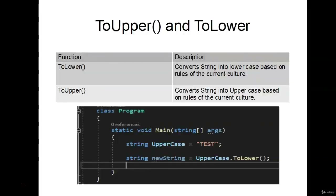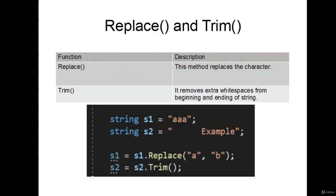Welcome back. In this video, we're going to talk a little bit more about string methods. In our last video, when you create a string variable, you basically create an object of that class. Two of the ones we used were ToLower and ToUpper — we took an uppercase string and made it lowercase, and took a lowercase string and made it uppercase. There are many other types of methods and we're going to cover some of the most important ones, starting with Replace and Trim.